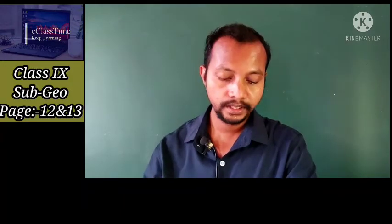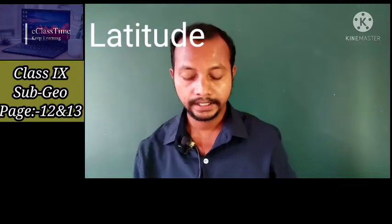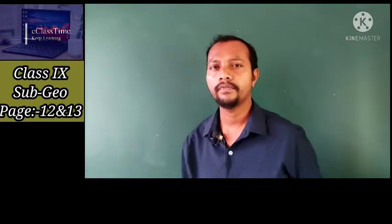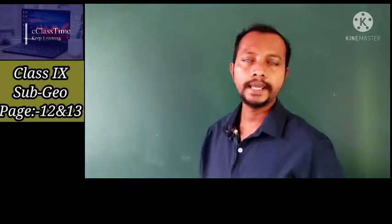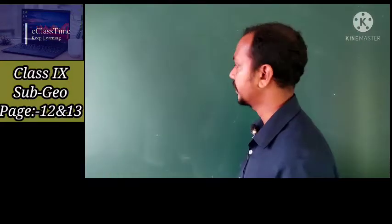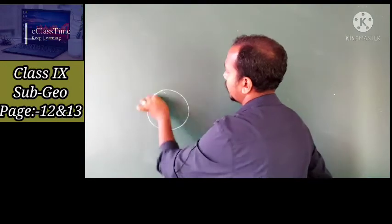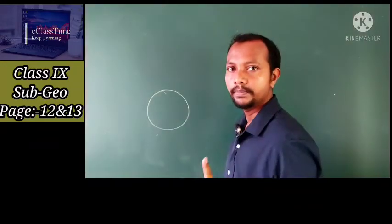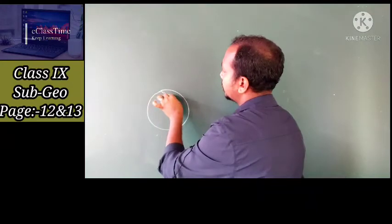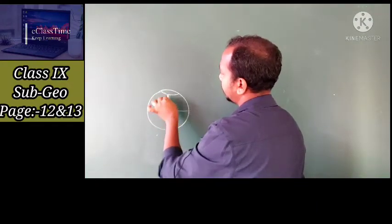We shall start with latitude. Let us try to understand what latitude is and how it affects the elements — which element of weather and climate is getting affected. If we see the globe, we can see lines: one line in the center this way.